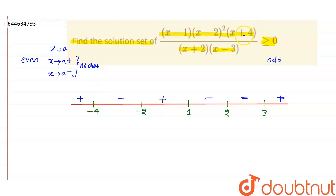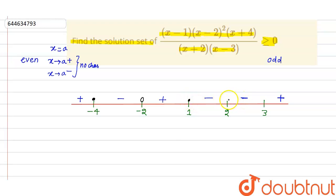At x equals minus four, the expression becomes zero, so this point is closed. At x equals minus two, substituting gives something divided by zero — undefined — so this is open. At x equals one, this is closed. At x equals two, this is also closed. At x equals three, the expression is undefined, so this is open.